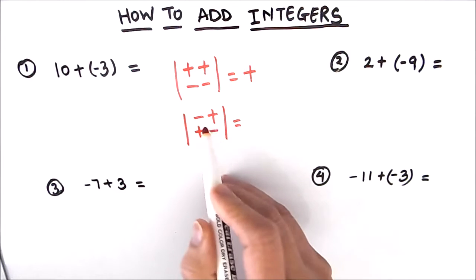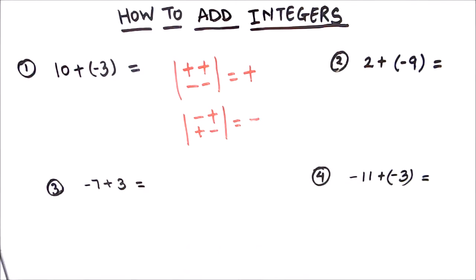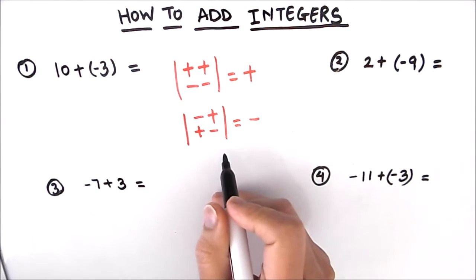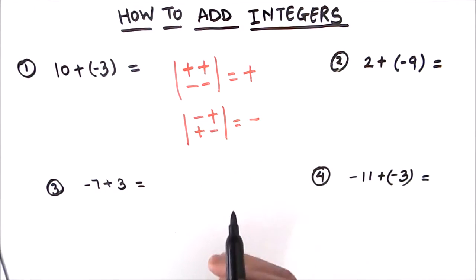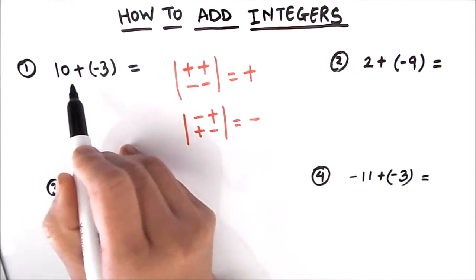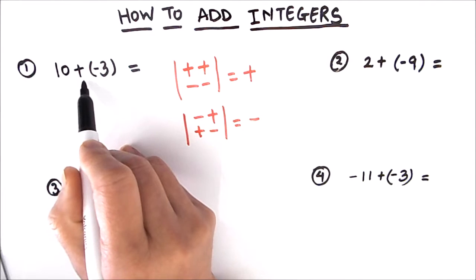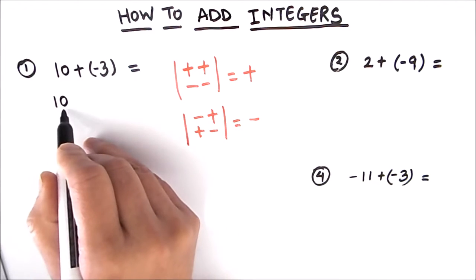We need to always remember that the resultant sign will be the sign of the number which is bigger in absolute value — that means the bigger number ignoring its sign. So the first example is 10 plus negative 3. First, we'll write the first number, which is 10.